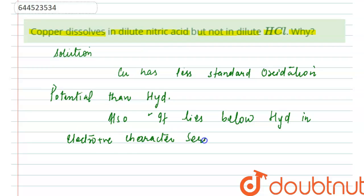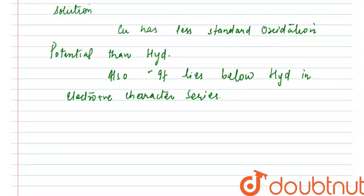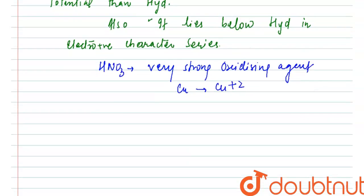These are the two main reasons why copper fails to displace hydrogen. But in the case of HNO3, HNO3 is a very strong oxidizing agent. It oxidizes copper to Cu plus 2.